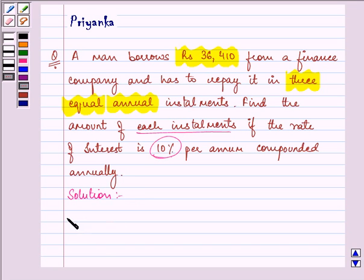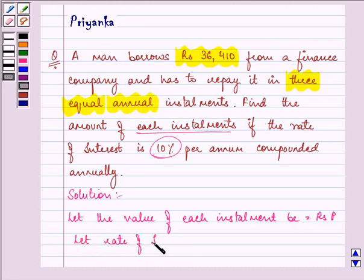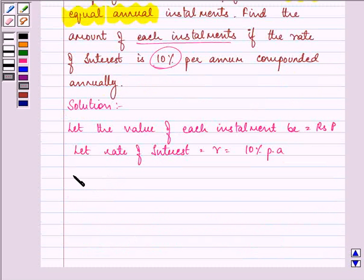Let the value of each installment be Rs. P. Let the rate of interest be r, that is 10% per annum, and the amount that he needs to pay back is Rs. 36,410.